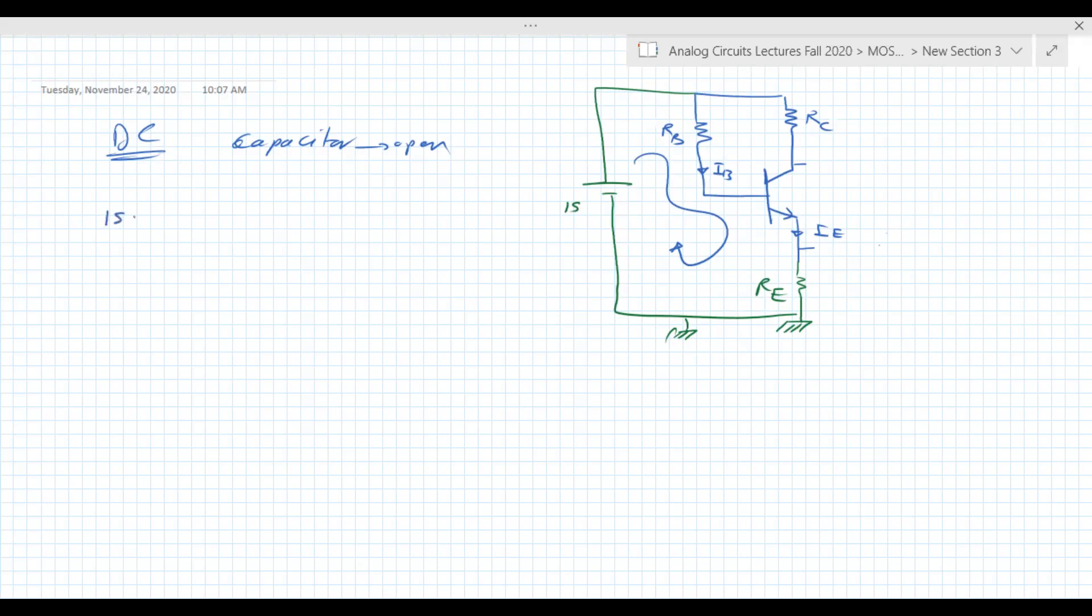If we do this loop, 15 equals IE*RE plus 0.7 plus IB*RB. So 15 equals IE*RA plus 0.7, and IB is just IE over beta, or beta plus one. Usually we consider beta equal to beta plus one because beta is much larger than one. With amplifiers, we have beta that is very big. This is an equation that has only one unknown, which is IE.